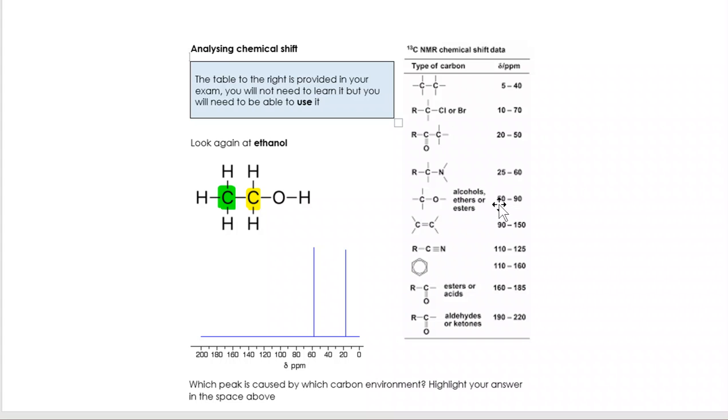I've got a peak here with a C next to a single bond, an alcohol, ether or ester, between 50 and 90. So actually this peak is due to this carbon. The other carbon, CH3 with a CH2OH coming off it, relates to between 5 and 40, a carbon with another carbon next to it.